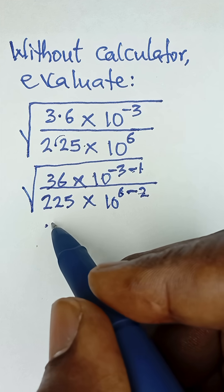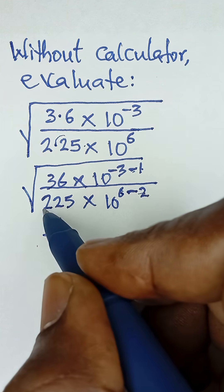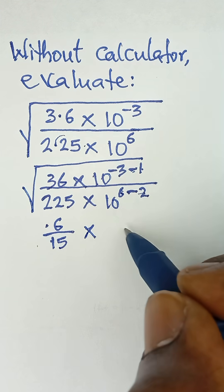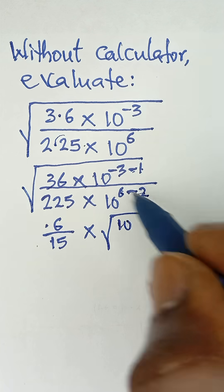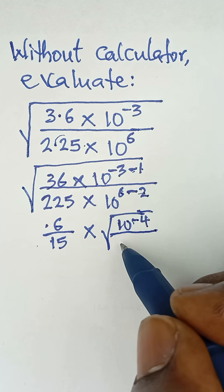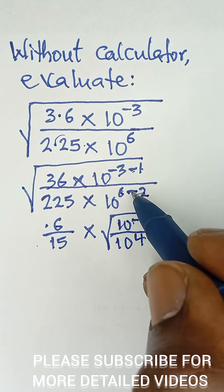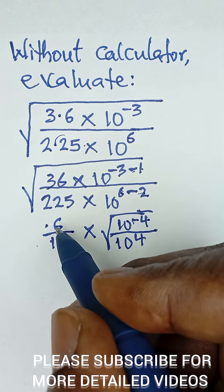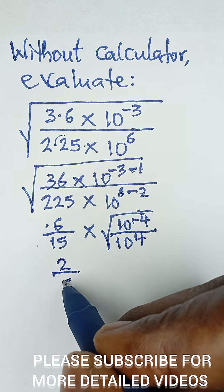This becomes the square root of 36, which is 6, all divided by the square root of 225, which is 15, and then multiplied by the square root of 10 raised to the power of negative 4, all divided by 10 raised to the power of 4. Since 6 minus 2 gives us 4, and in lowest terms 6 and 15 simplify to 2 and 5.